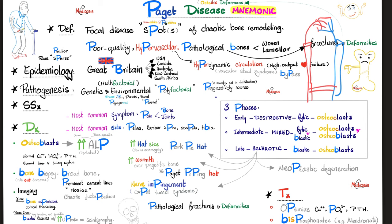Increased head size also occurs in acromegaly and blastic cancer metastasis to the skull. The pagetic bone is warm to the touch — the pelvis, lumbar spine — because it's an inflammatory process (itis: redness, heat, swelling, pain, loss of function). Bone swelling can impinge on nerves, causing carpal tunnel, tarsal tunnel, or other tunnel syndromes.